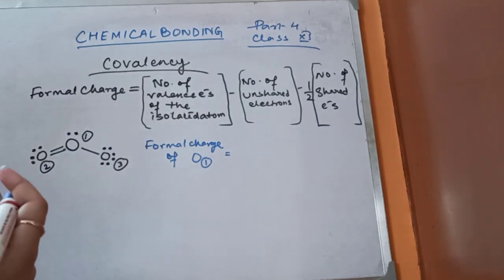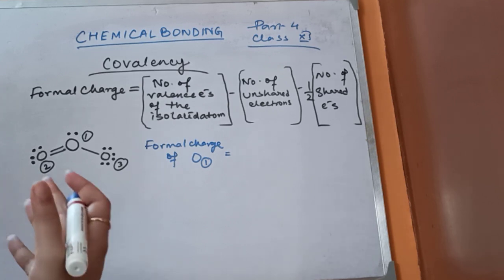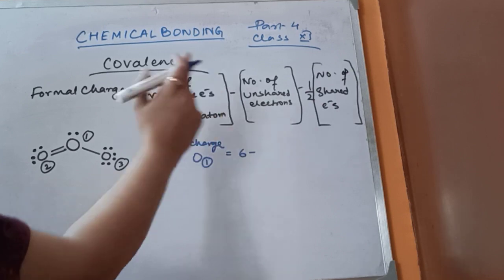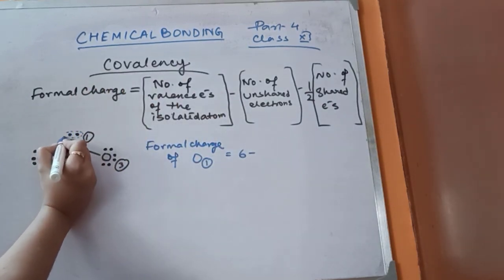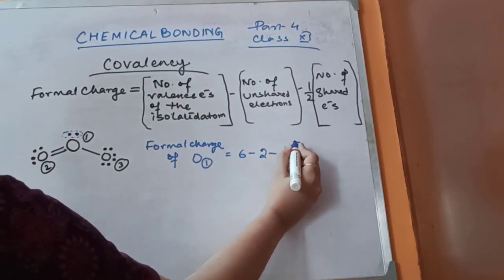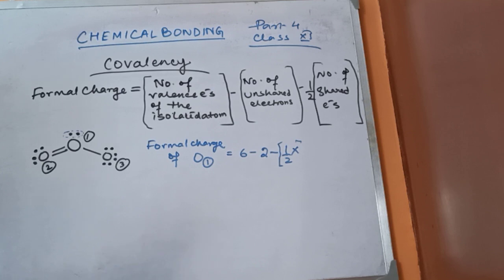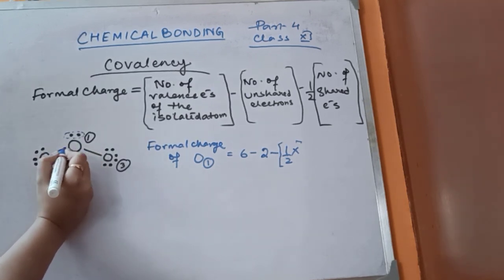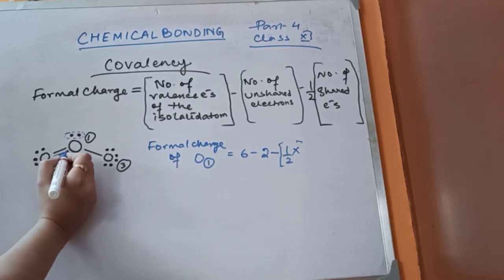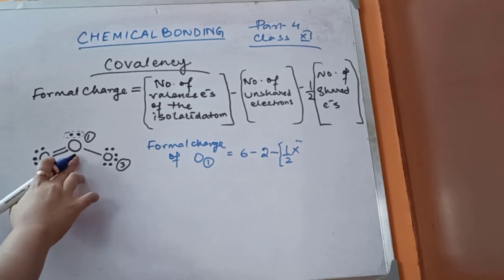The number of valence electrons in an oxygen atom — the electronic configuration of oxygen is 2, 6 — so the number of valence electrons for oxygen is 6. Minus number of unshared electrons: the lone pair present on O1 gives 2 unshared electrons. So: 6 minus 2, minus half. Each bond has 2 electrons; there are three bonds contributing 2+2+2 = 6 shared electrons total.